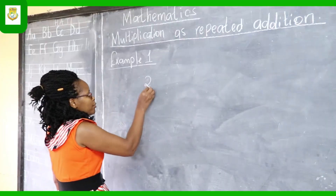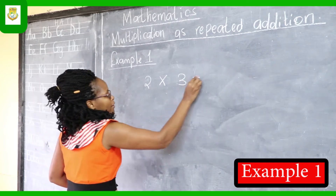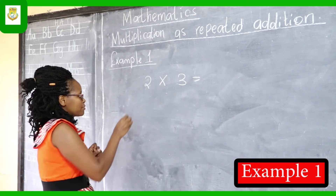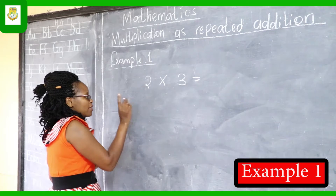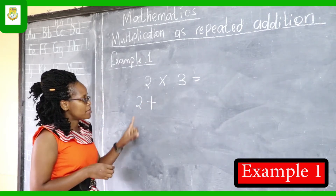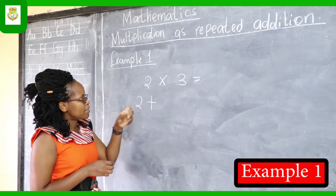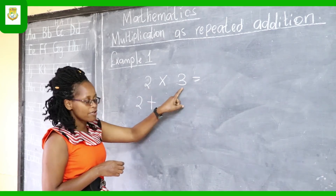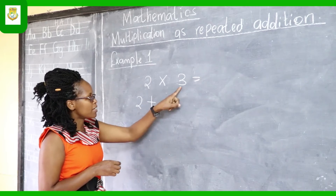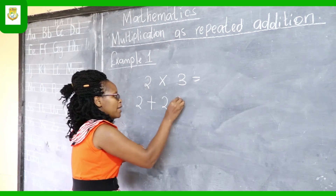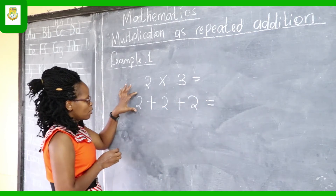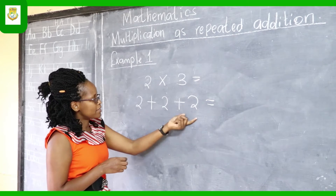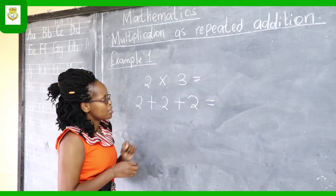For example, two times three. Two times three can also be written as a repeated addition sentence. We write the first digit, which is two, and then find out how many times two is added. The figure three tells us how many times it is added — three times. So we write two plus two plus two. When we count, one, two, three, it tells us that the number two is added three times, hence we have two multiplied by three.